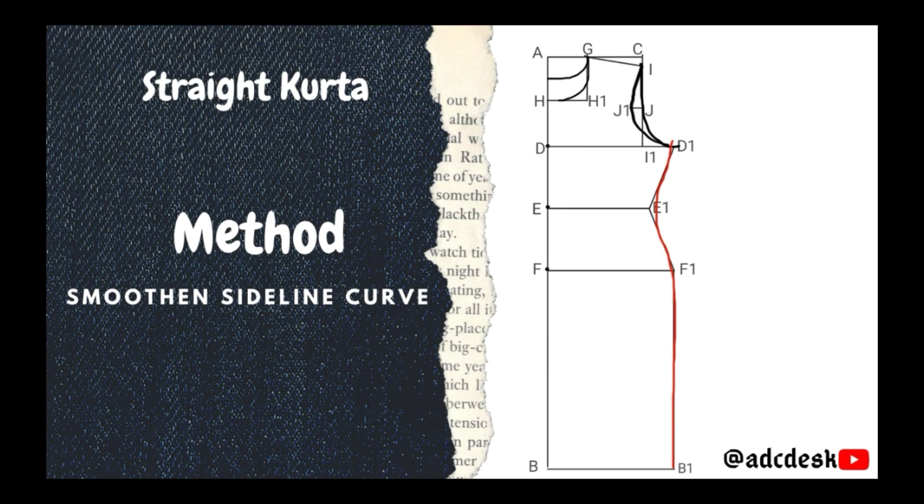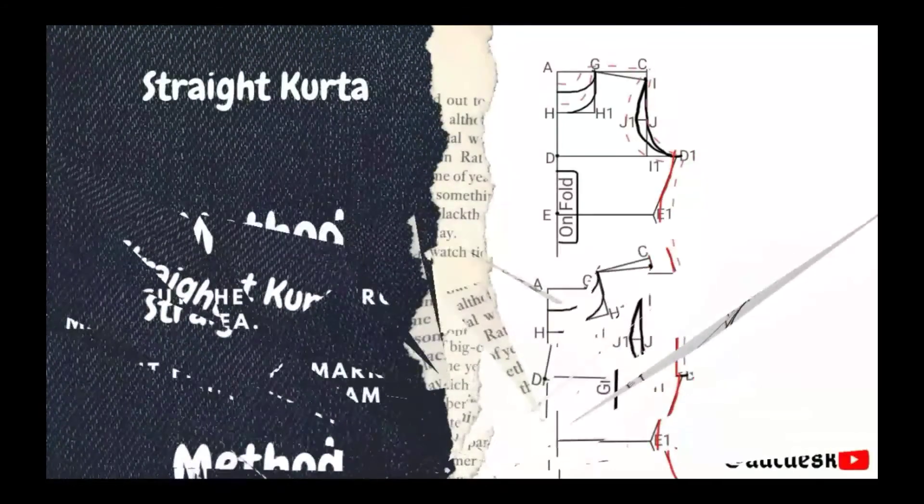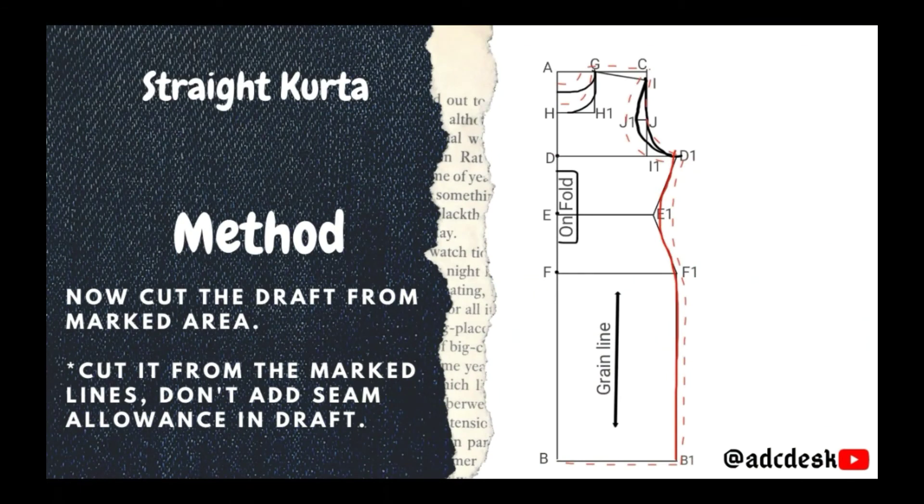Now cut your draft from the marked area. Here's something very important that you need to keep in mind. We will cut on the marked line. That is our cutting line. We will not add any extra allowance or seam allowance. We only add ease allowance in draft. Seam allowance will be added in fabric. When we place this draft onto the fabric and cut the fabric, only then we will need to add extra allowance. In the draft or on paper, no need to take any extra margin for anything.